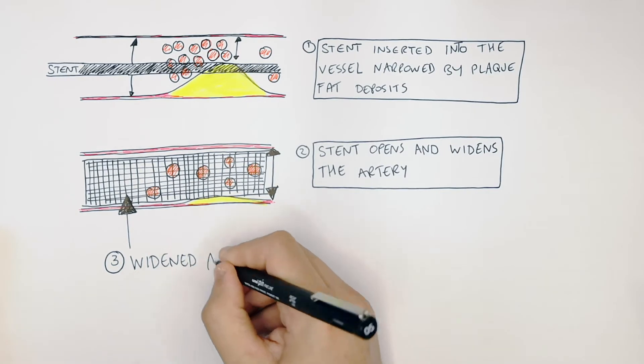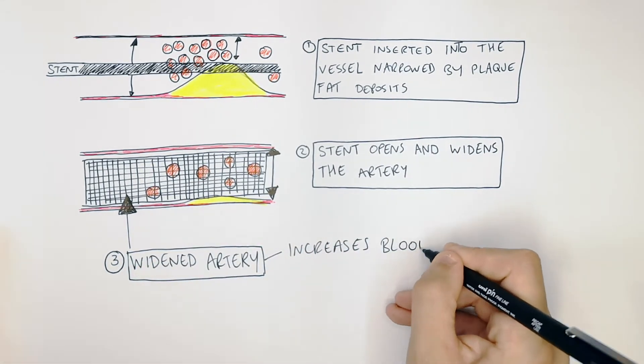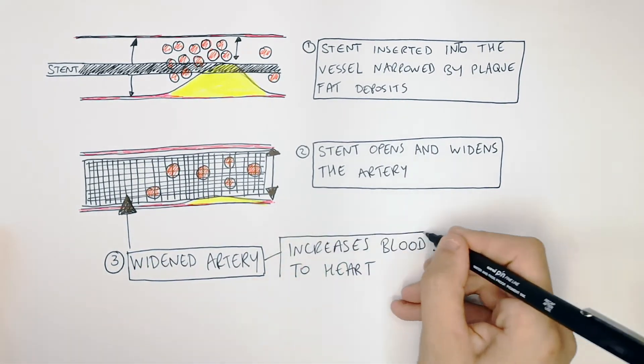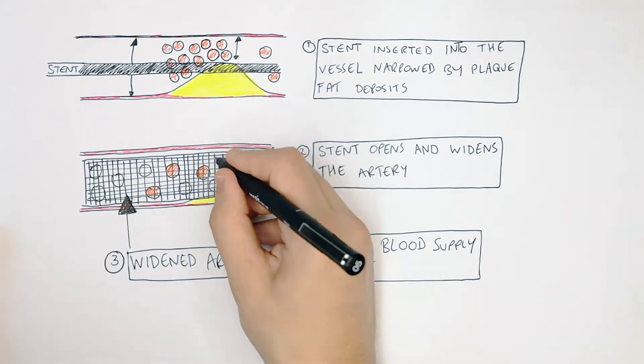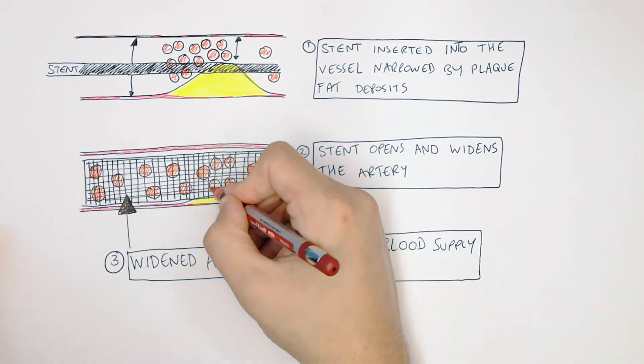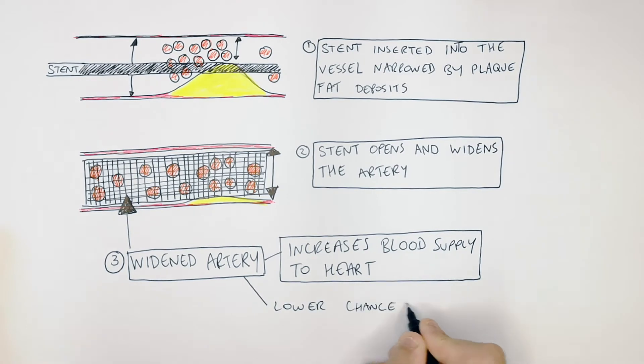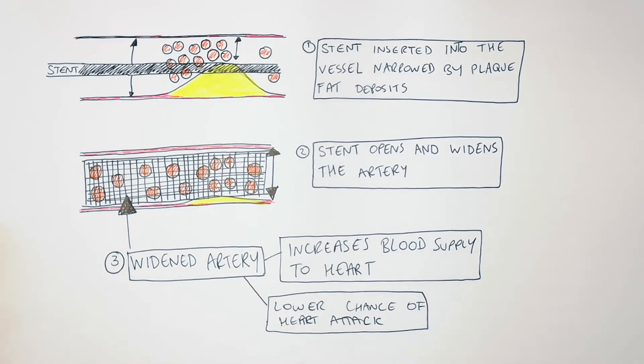The stent opens and widens the artery and flattens the fatty plaque. The widened artery increases the blood supply to the heart. If you increase the blood supply to the heart, that means you increase oxygen and glucose, which reduces the chance of a heart attack.